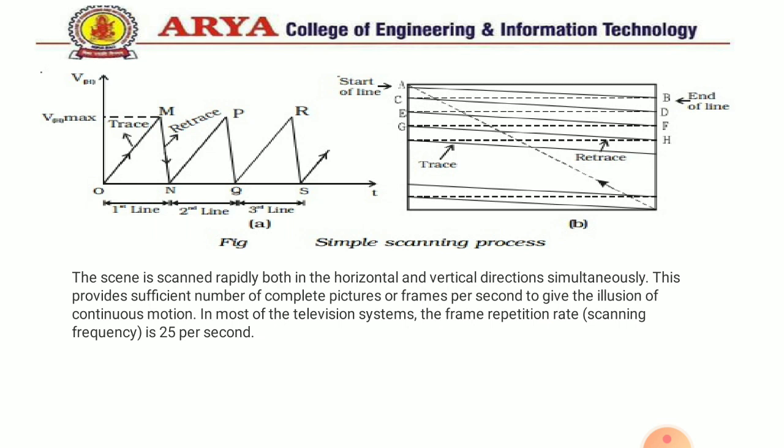In the scanning process, the electron beam starts from the top left to bottom right. When the electron beam moves from left to right it is called the trace, and when the electron beam moves from right to left it is called the retrace. Information is only present during the trace period; during the retrace period there is no information. There are two types of scanning: vertical scanning, where the electron beam moves from top to bottom, and horizontal scanning, where the electron beam moves from left to right.